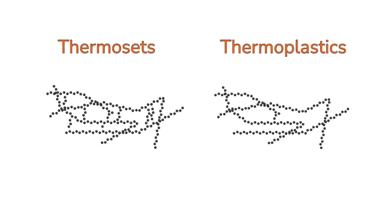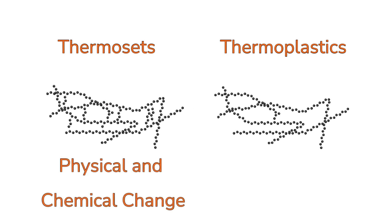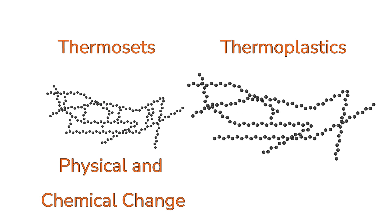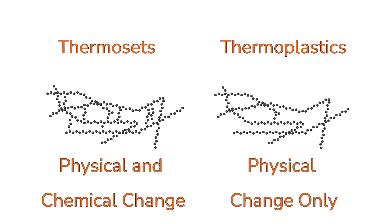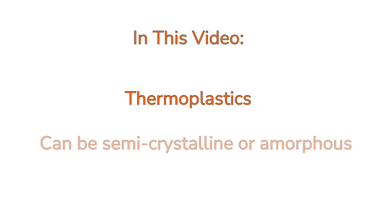From the second video in the Polymeric Materials series, we know that polymers can either be classified as thermosets, which cross-link when processed resulting in a permanently rigid part, or thermoplastics, which undergo a physical change when processed resulting in a part that can be remelted and processed again. In this video, we'll take a closer look at thermoplastics, which can be further broken down into semi-crystalline and amorphous resins.